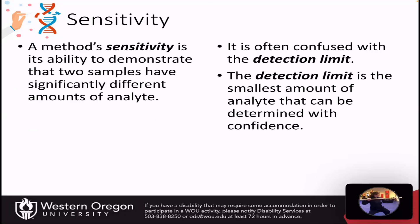Sensitivity is a method's ability to demonstrate that two samples have significantly different amounts of analytes. So if I have sample one and sample two, how much do those two things have to differ so that I can tell them apart with my methodology? This is often confused with the detection limit. The detection limit is the smallest amount of the analyte that can be determined with confidence — that's a separate measurement from sensitivity. Sensitivity is about the change between two samples: what is the smallest difference between them that I can confidently say are different.